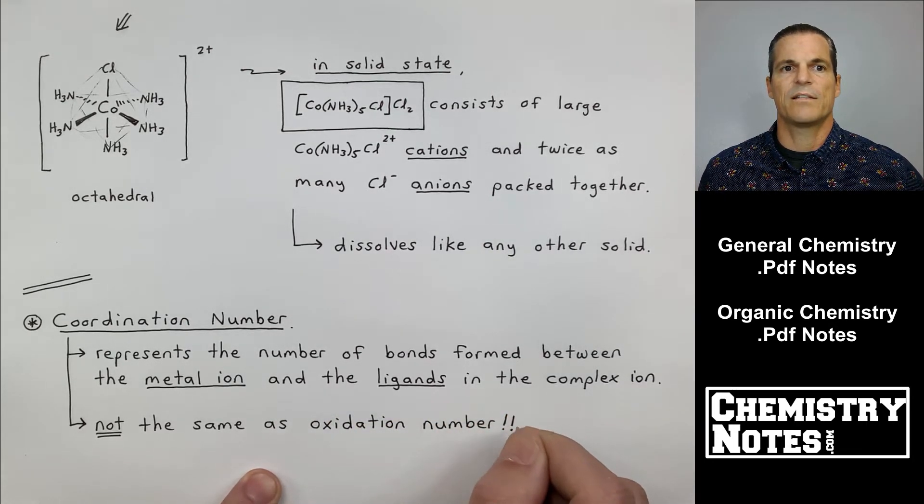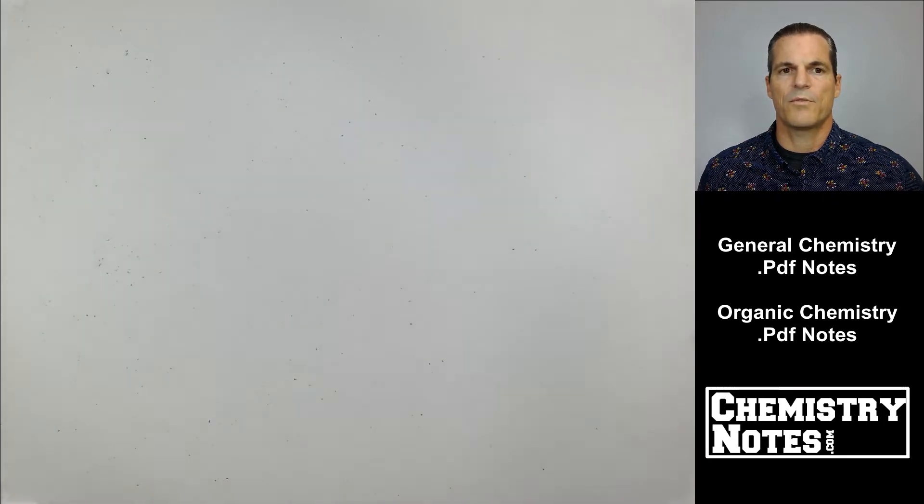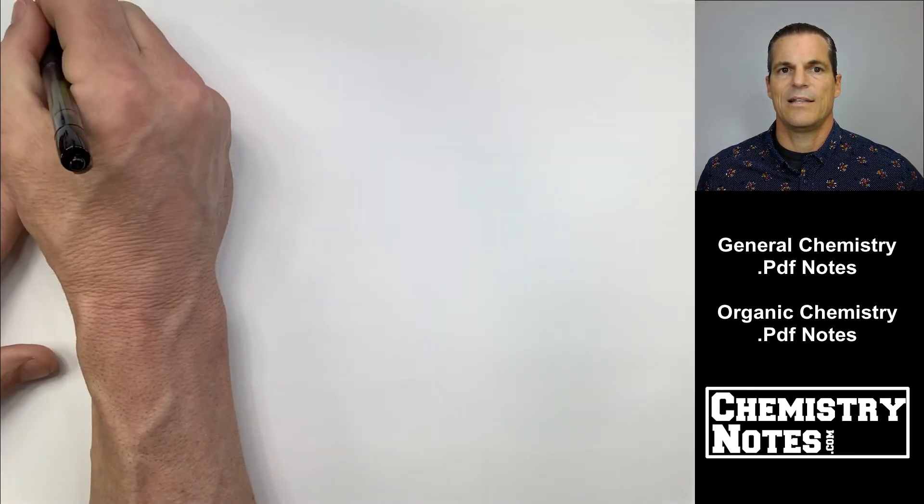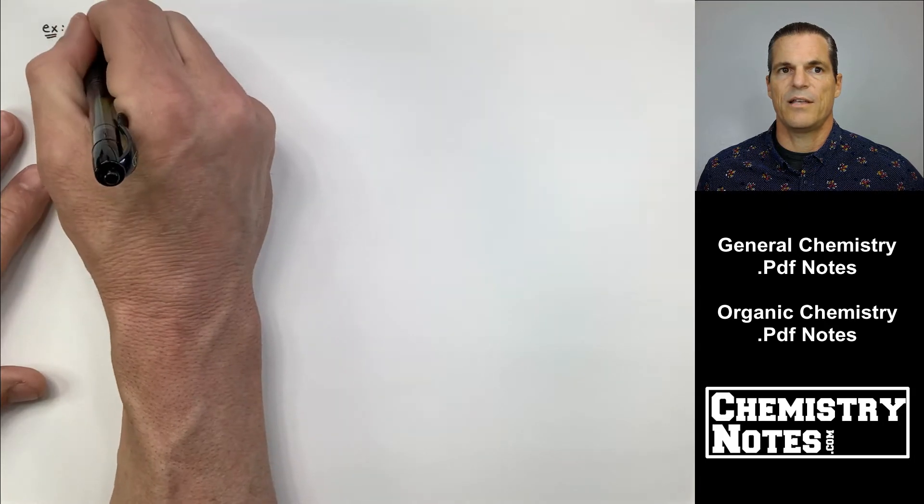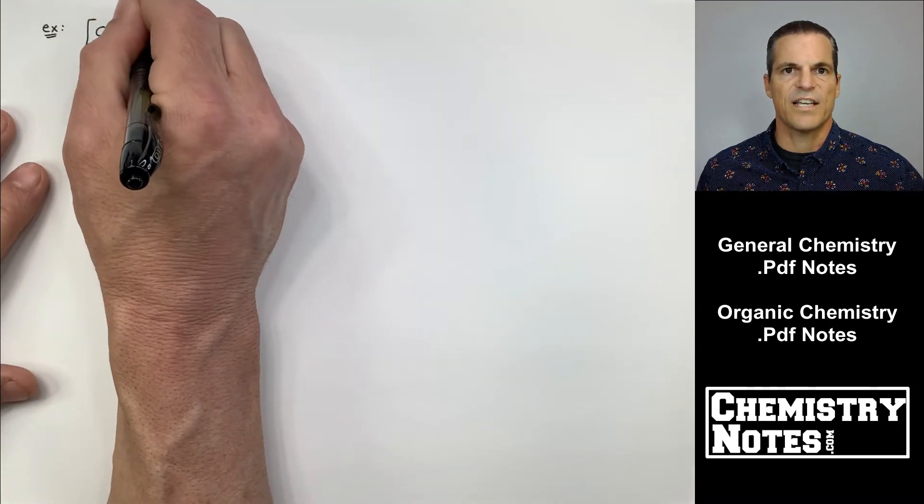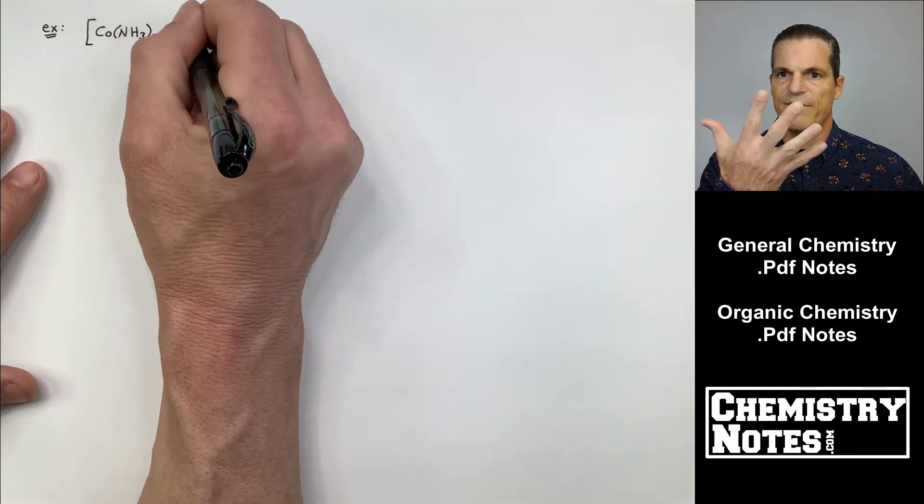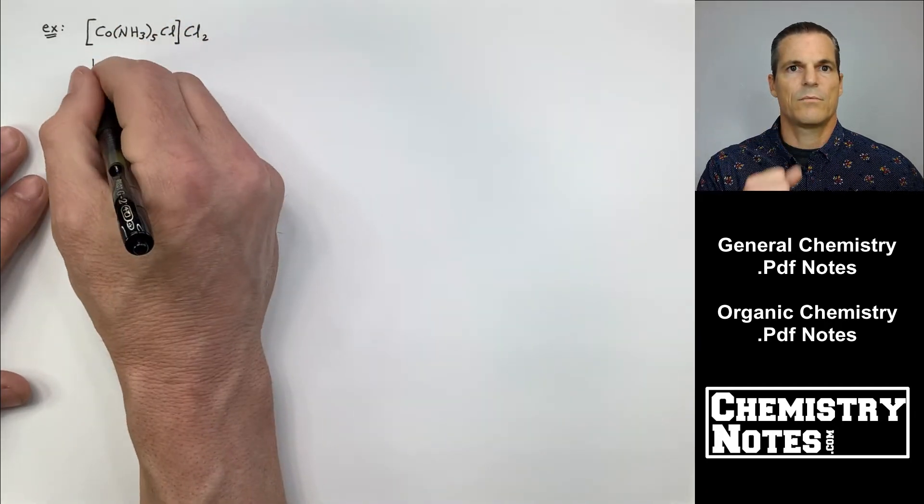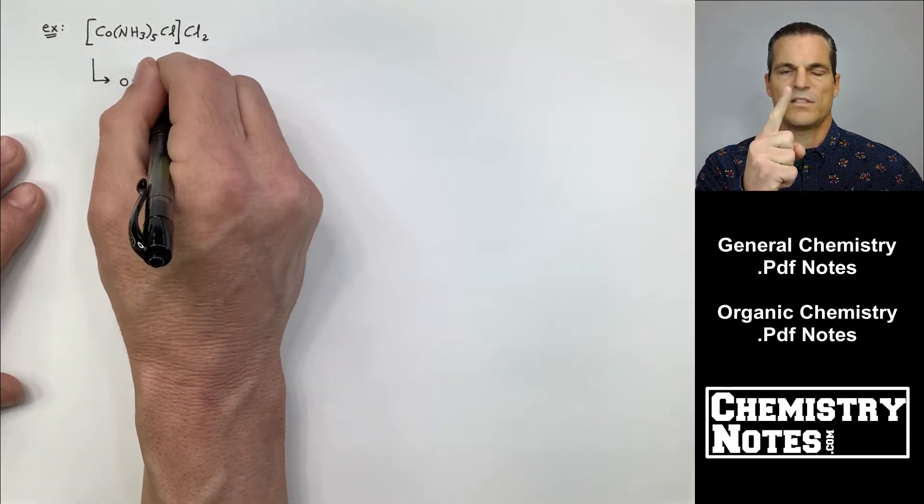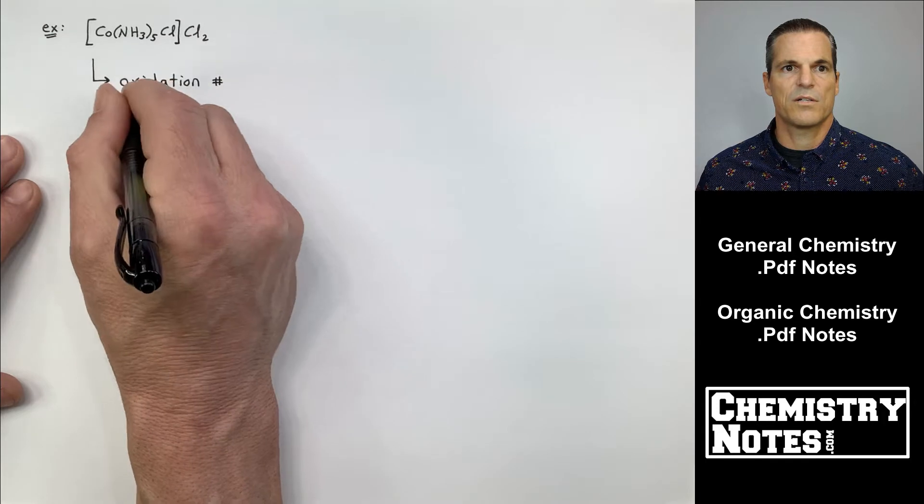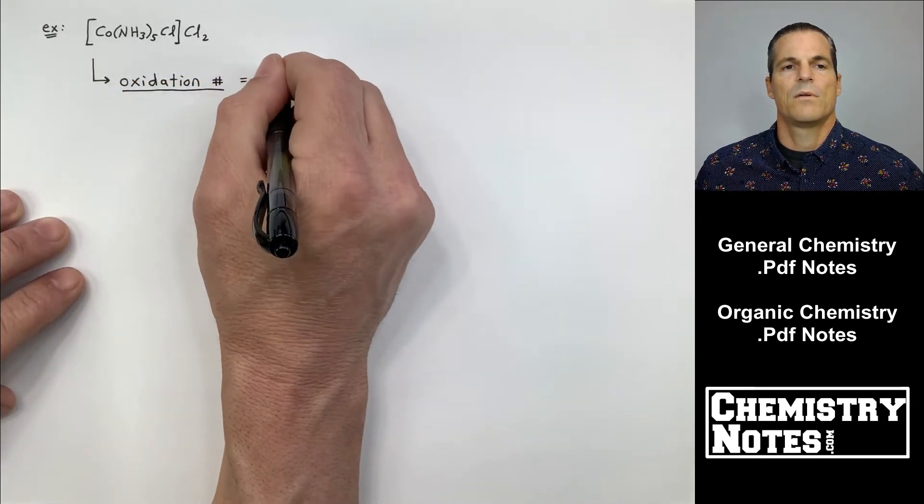So if I look at the top one there, that cobalt, my cobalt three plus in the octahedral example I just did, he had there is a coordination number of six. He's got the five NH3 ligands, which are neutral, and then the one Cl ligand, which is a minus one charge.